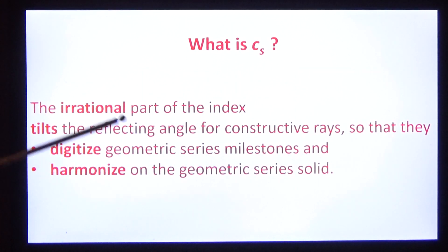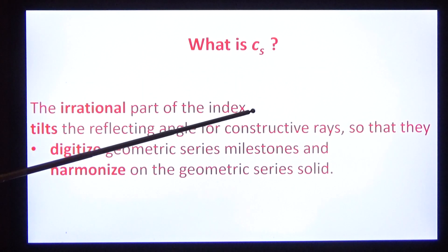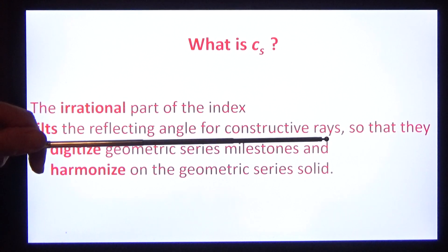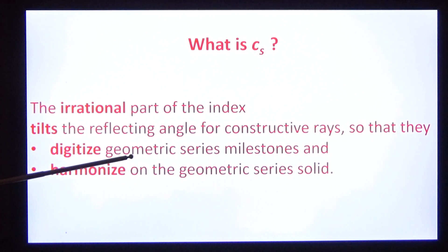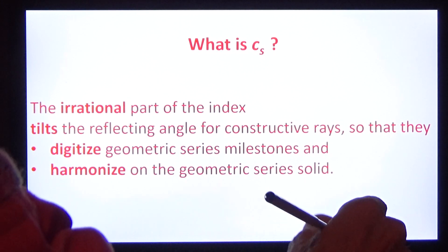So what is Cs? It's the irrational part of the index. It tilts the reflecting angle for constructive rays so that they digitize the geometric series milestones and harmonize on the geometric series. This is the reason for the sharp diffraction.